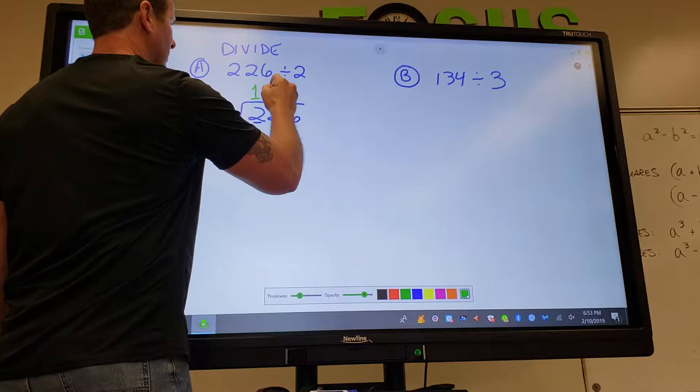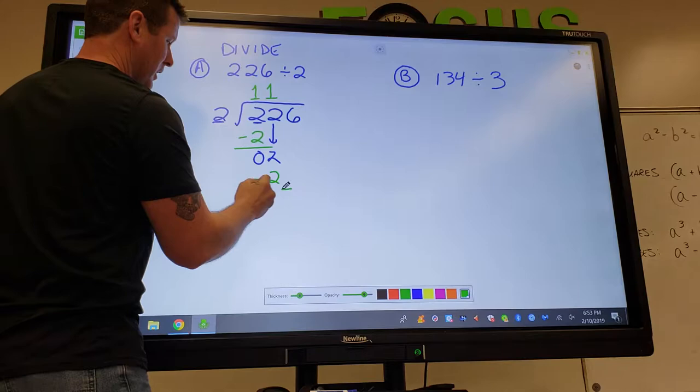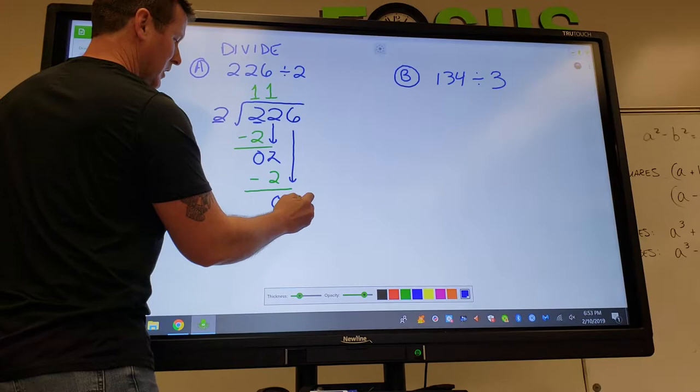How many times does 2 go into 2? One time. And what do I do? I multiply the 1 with the 2, write it right here and then subtract. And what do I get? 0.